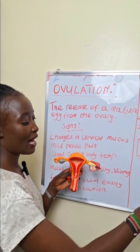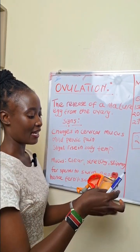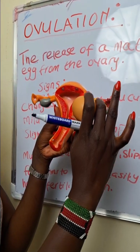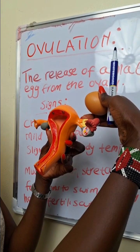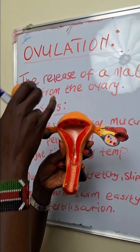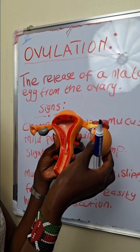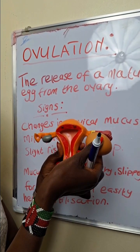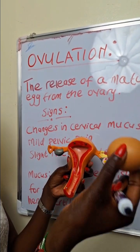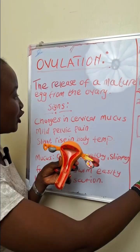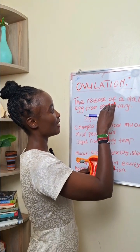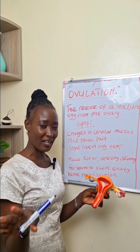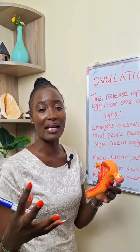Ovulation is the release of a mature egg from the ovary. As you can see in my diagram and this particular model, this is the fallopian tube right here and this is the ovary. The release of an egg — this is the woman releasing a mature egg — that is what we call ovulation. Once again, it is the release of a mature egg from the ovary.